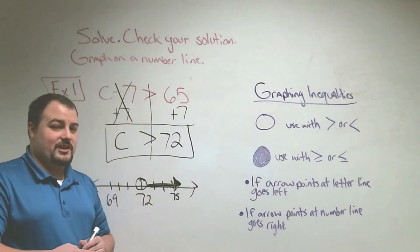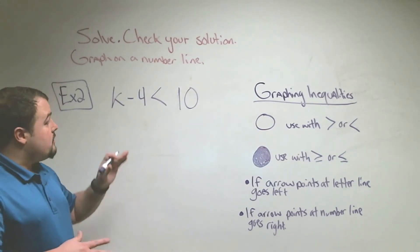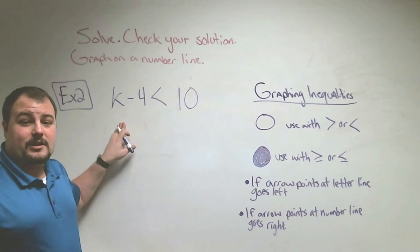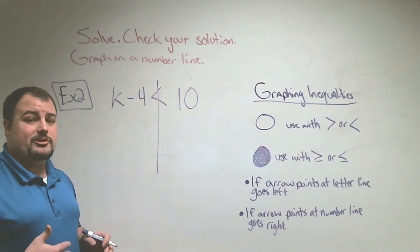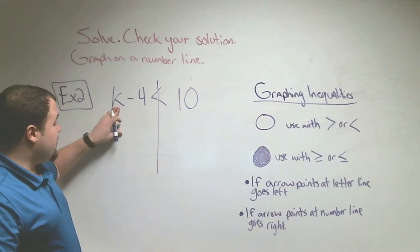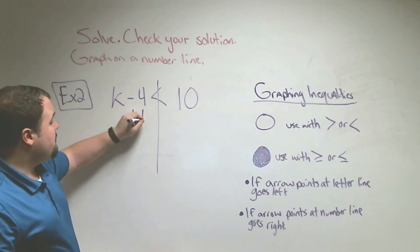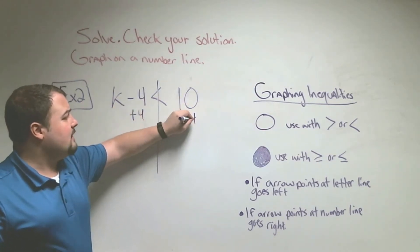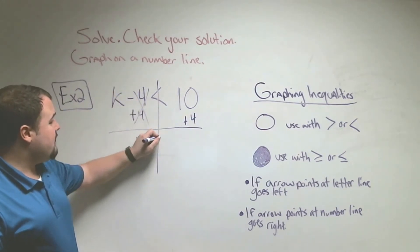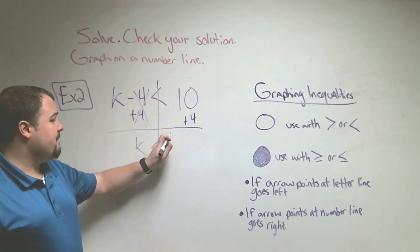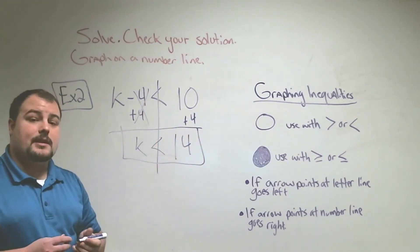In Example 2, we have k minus 4 is less than 10. Our goal is to get the letter k by itself. Draw a line through the inequality sign. To get k alone, we get rid of minus 4 — the opposite is plus 4, so we add 4 to each side. This cancels out, and we get k is less than 10 plus 4, which is 14. Our answer is k is less than 14.